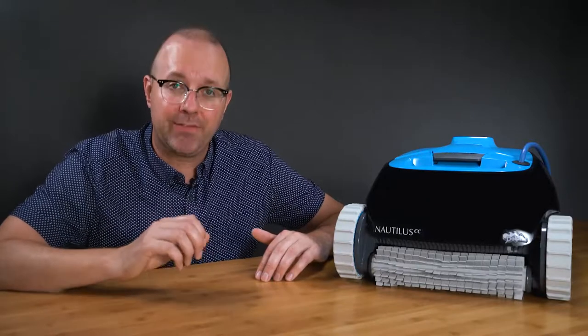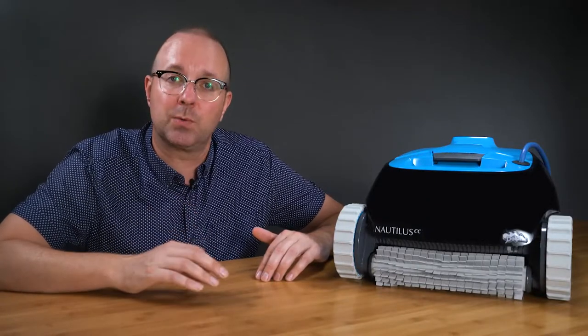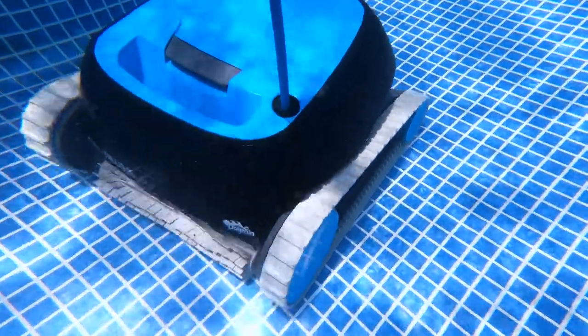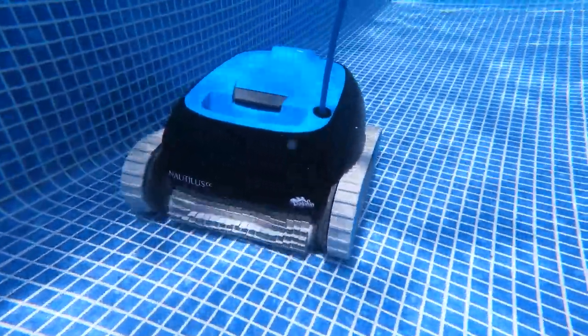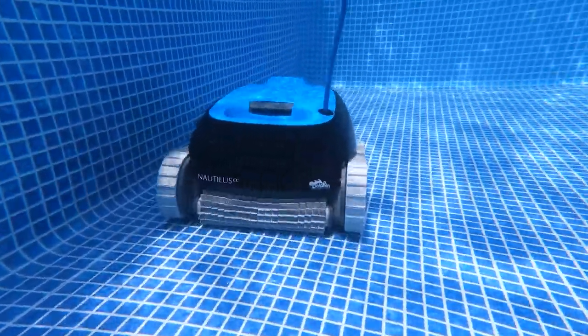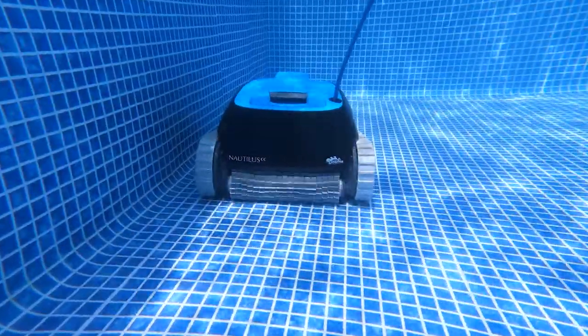It comes with the standard fine filter, power supply, manual, and the unit itself. The Nautilus CC is built for small pools up to 33 feet in length. It was super easy to set up and get started. I just plugged it in and it was ready to go.